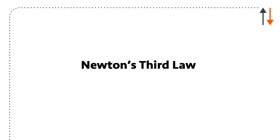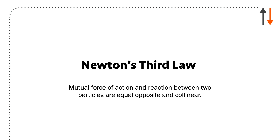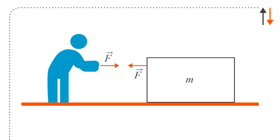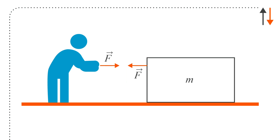The third law is that the mutual forces of action and reaction between two particles are equal, opposite, and collinear. So if I have a person pushing on a box with a force F, the box is pushing back with a force F on the person. We can use Newton's second law in these problems, and this is also an important part of MIE-100 — we'll talk about it particularly when we look at systems of particles.